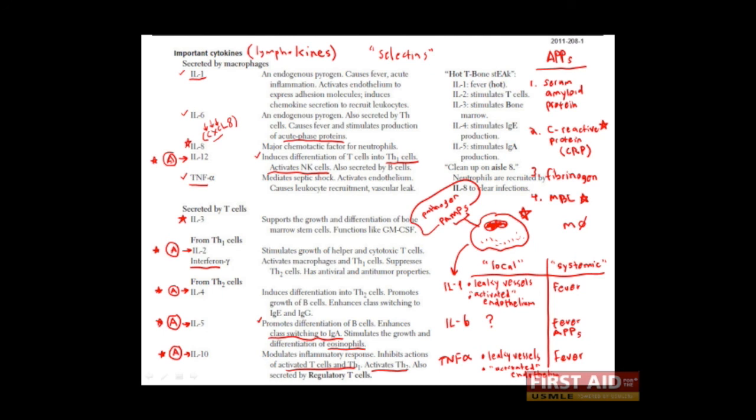Finally, there's interleukin-3. As you can imagine, in the course of an immune response, many immune cells are dying. Neutrophils are on kamikaze missions, essentially phagocytosing pathogens and releasing all sorts of free radicals, and ultimately dying. Macrophages are filling up with more and more pathogens. And so you can imagine that in order to sustain an immune response, you need to replenish immune cells. And that's exactly the role of interleukin-3.